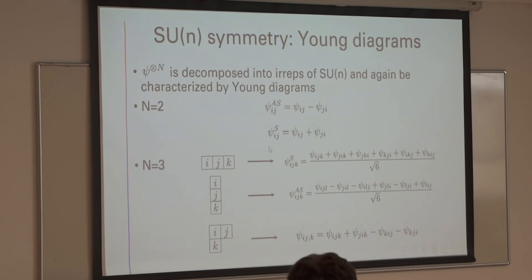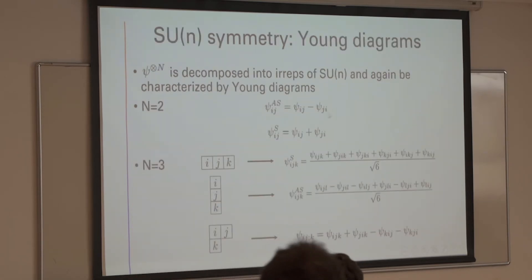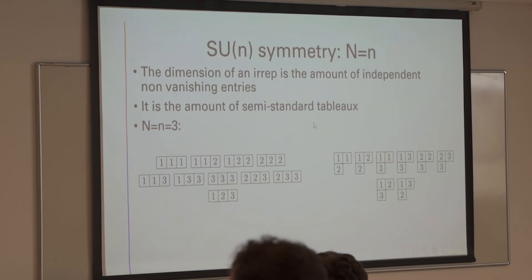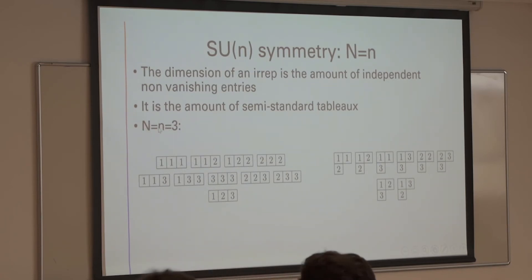To find the dimension of the corresponding irreducible representation of SU(N) for a given diagram, we need to find the number of independent non-vanishing entries in these tensors. It turns out this equals the number of semi-standard tableaux of a diagram. A semi-standard tableau is the filling of a diagram with numbers such that they can repeat but are non-decreasing in rows and strictly increasing in columns.